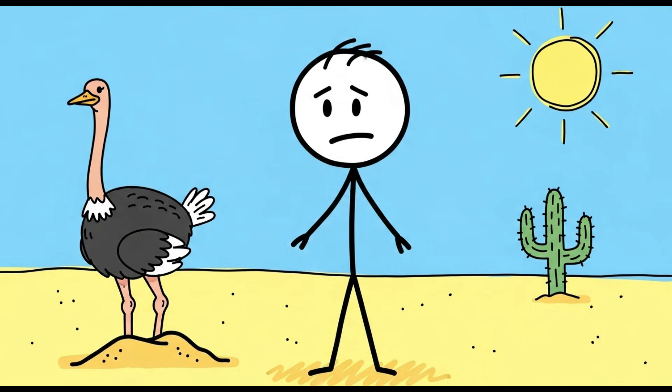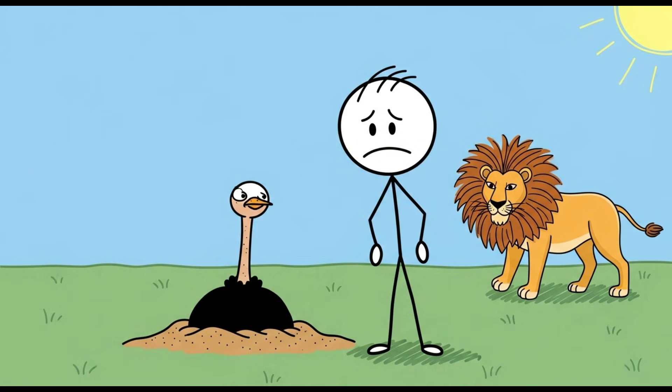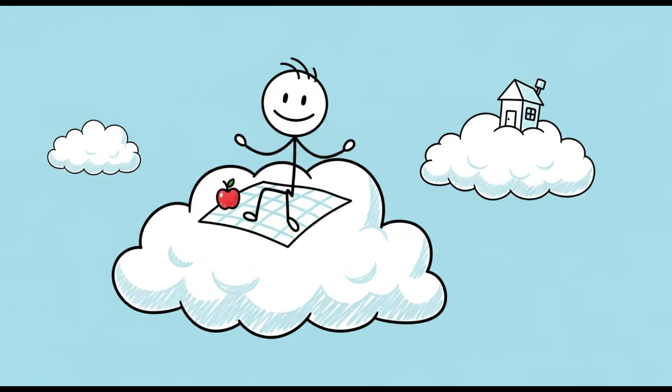An ostrich, faced with mild inconvenience, a predator, or perhaps just a socially awkward situation, immediately plunges its head deep into the sand. It's the ultimate symbol of denial. An animal so terrified of reality that it opts for a strategy of, if I can't see the lion, the lion can't see me.